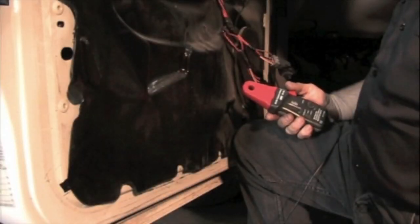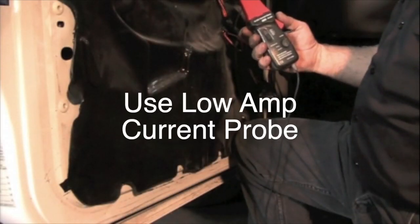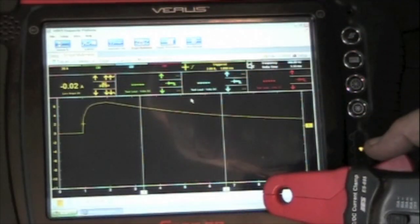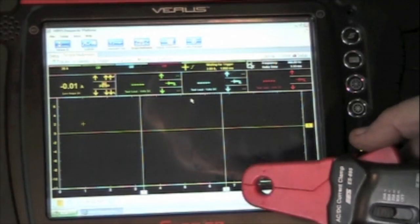We're going to be looking at the current ramp, so you have to use a low amp current probe. Now you always turn your current probe on and zero it. Always make sure you zero it.